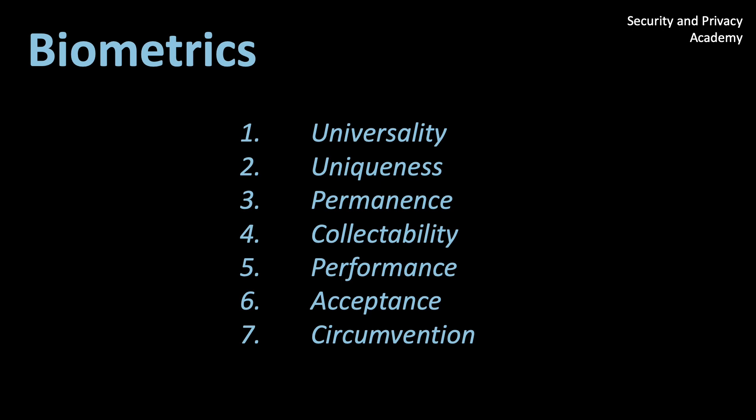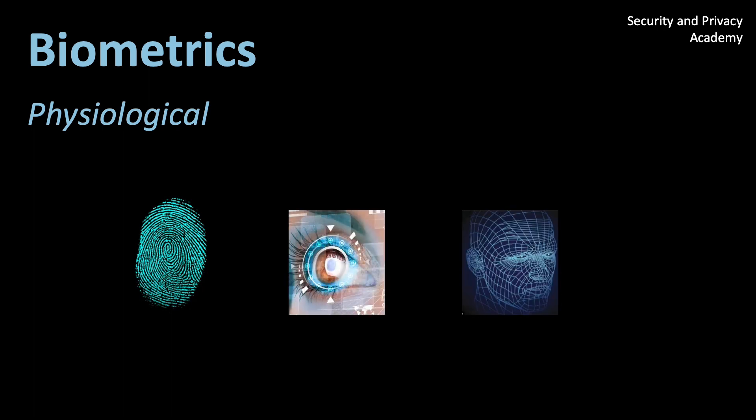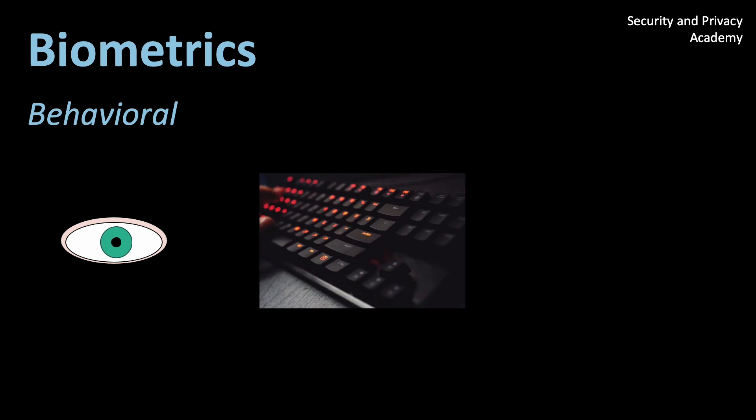Biometric features can be classified into two categories. First, we have physiological features, such as fingerprints, your retina, or your face. These are features of your body, hence the name physiological. The other category are behavioral characteristics. These refer to all the things you do, such as eye movement, typing behavior, or walking behavior, also known as gait. Note that these are only examples, there are many more features for both categories.